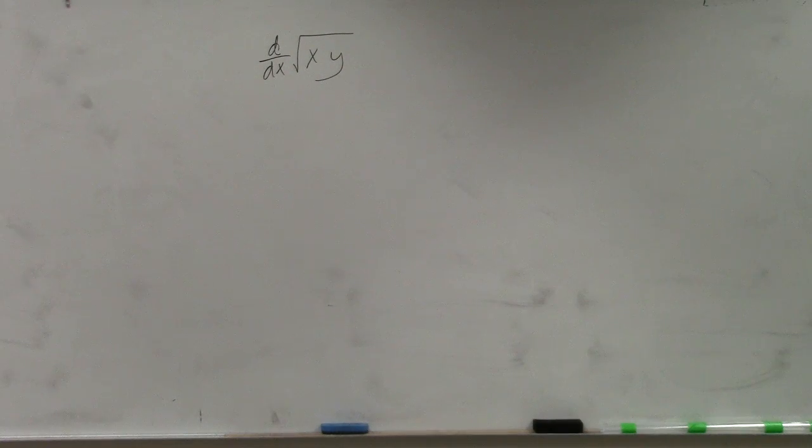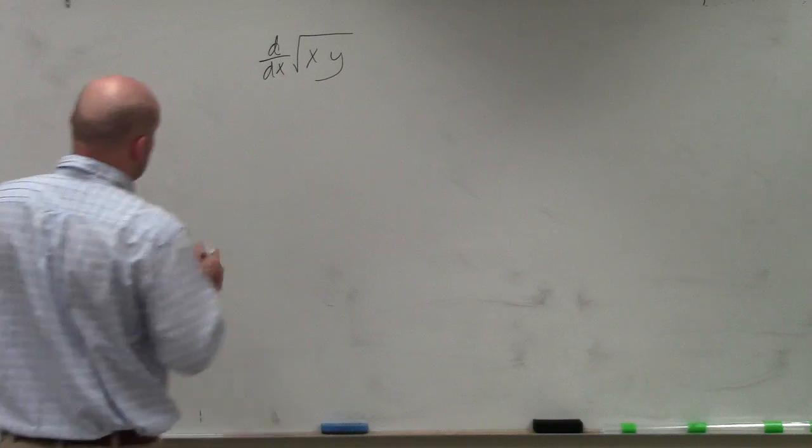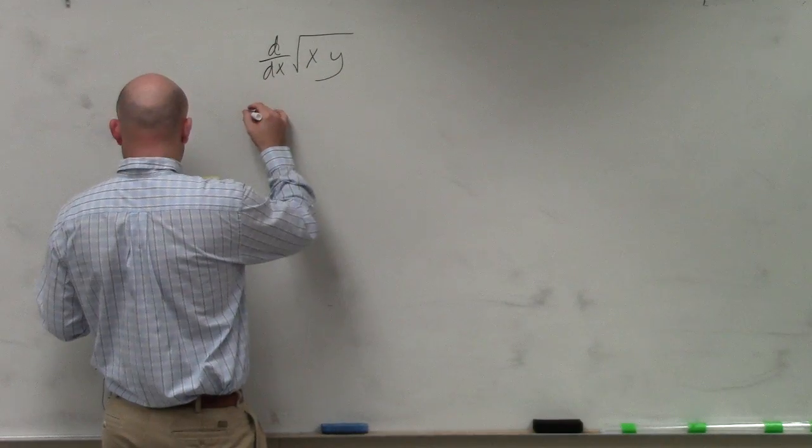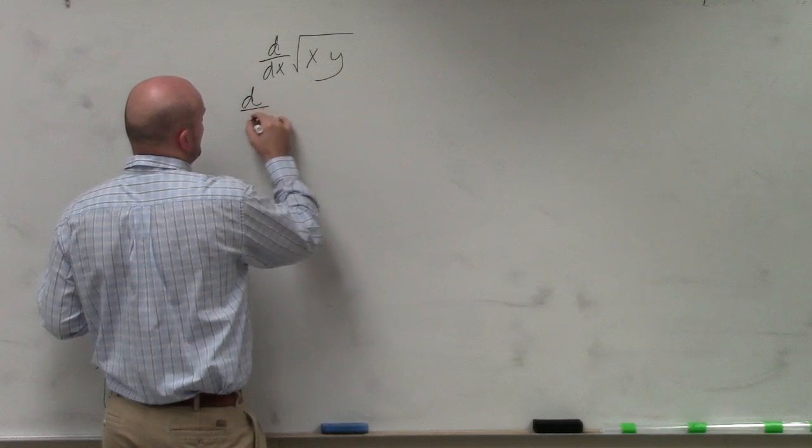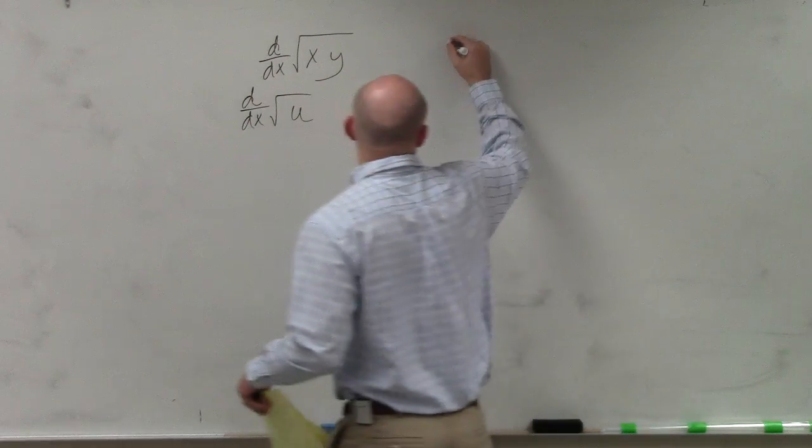But if we're looking into this one again, we can see that we have a chain rule. You could say that we have, so we're trying to find d over dx. We could basically say d over dx of the square root of u.